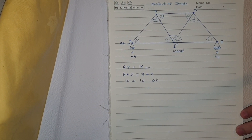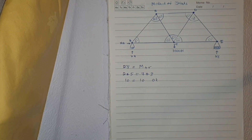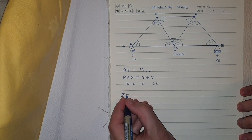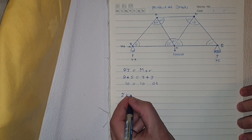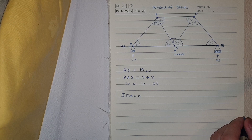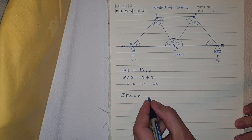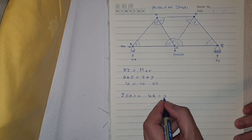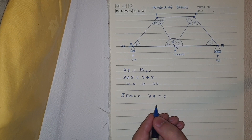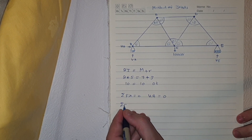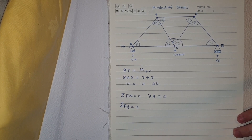Now I'm going to calculate the reactions. Step one: take summation of Fx equal to zero. We have only HA and no other horizontal forces, so HA equals zero. Step two: take summation of Fy equal to zero.